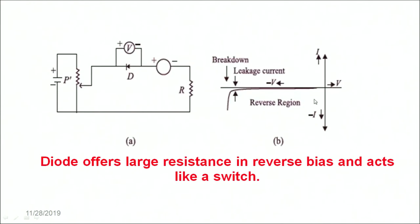What is observed is a very small amount of current being passed in the reverse bias, and a very large current starts initiating once the breakdown region is attained. So in the reverse bias the diode does not allow the current to flow; only in the forward bias does the diode allow the current to flow. In order to understand the characteristics in detail, let's do a simple experiment showing the diode in forward and reverse bias.